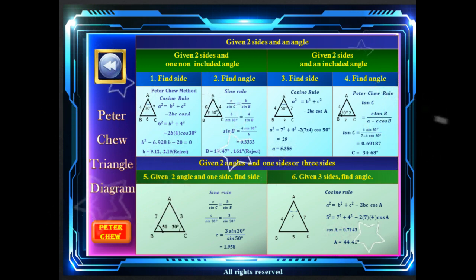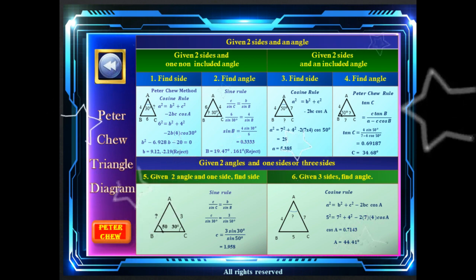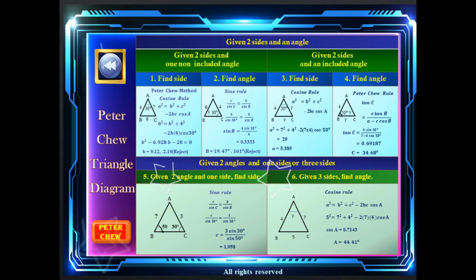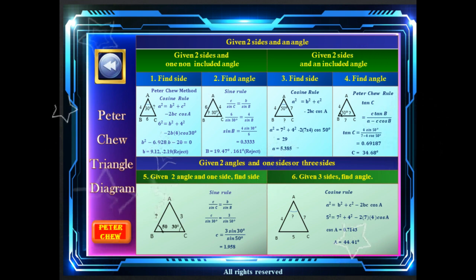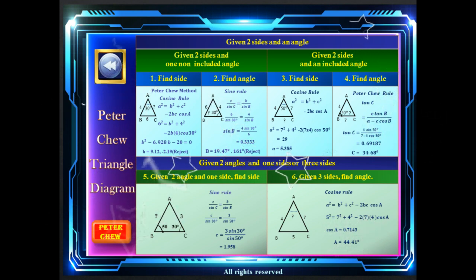As shown in the Peter Chu triangle diagram, all triangle problems can be solved simply with the help of the cosine rule, sine rule, Peter Chu rule, and method. The objective of the Peter Chu triangle diagram is to suggest a better single rule that allows anyone to solve any problem in the topic of solution of triangles simply, directly, and more accurately.